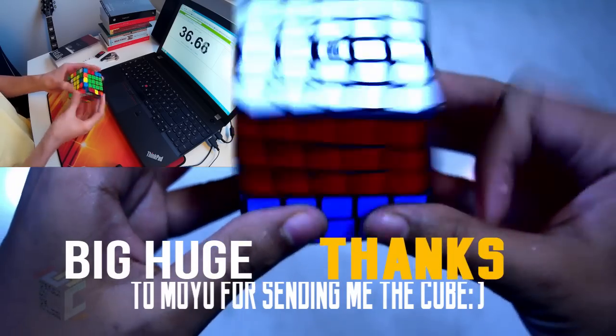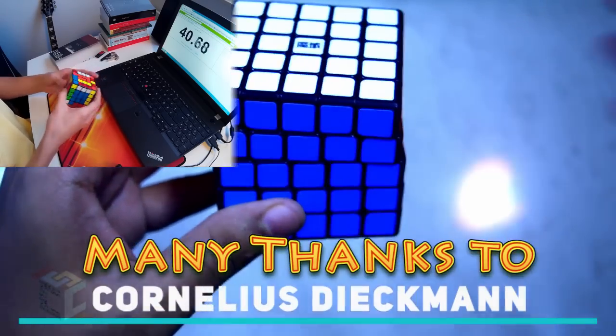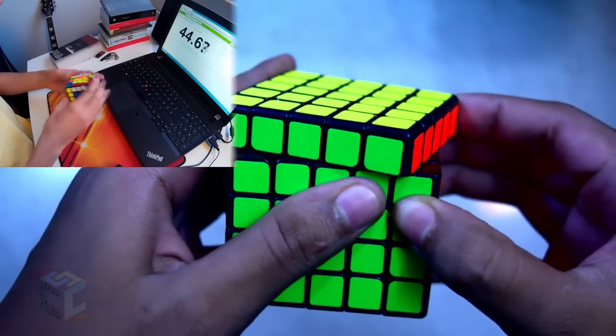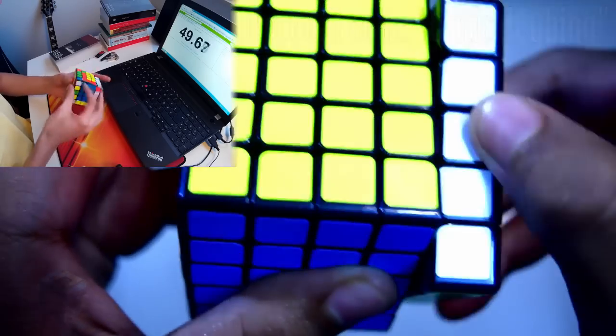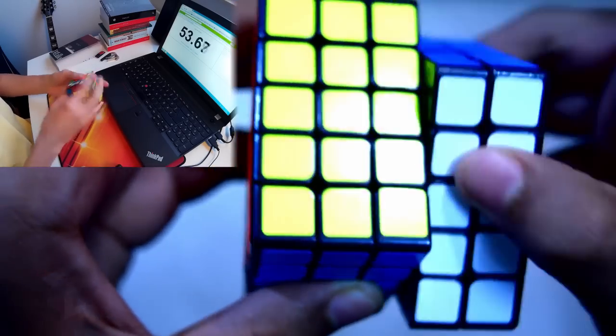If you want to buy it, you can buy it from Chinese stores like CubeZZ or Lightake or you can buy it from Speedcube Shop as well. Use the discount code CRITICALCUBING to avail 15% off. Thank you guys for watching, stay tuned for some more reviews and I will meet you next time. Bye!